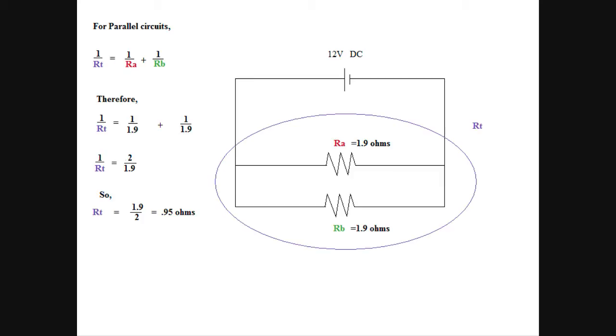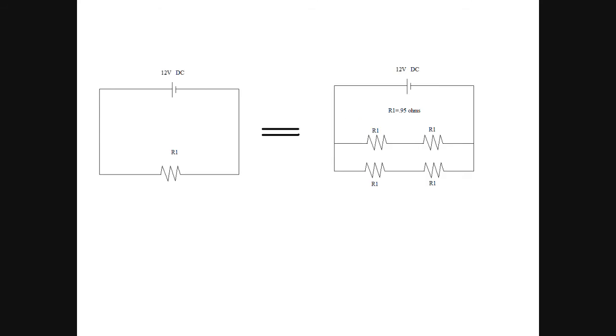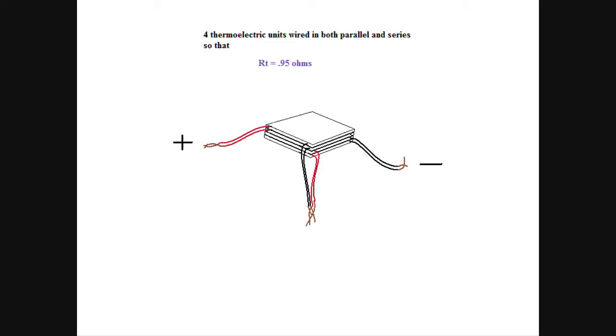If you'll remember, that .95 ohms sounds familiar because it's the exact same resistance as the original circuit I designed. Now, why would I do this? Why would I make four of these resistors like this as opposed to just one? What I'm trying to do is I'm trying to stack these Peltier units on top of each other to create a bigger distance between the hot side and the cold side of the stack.